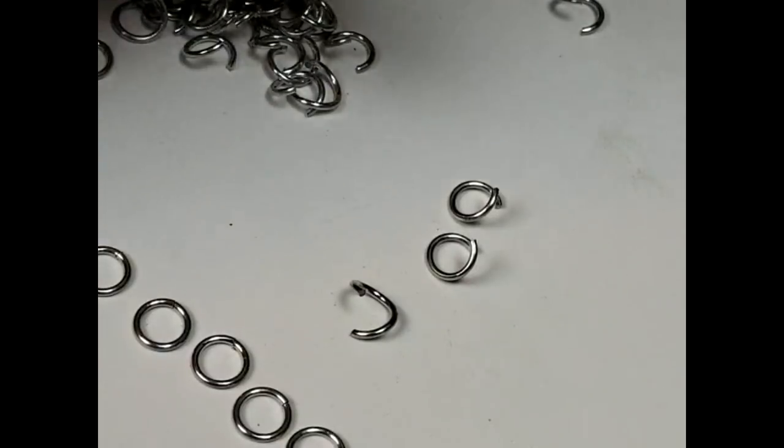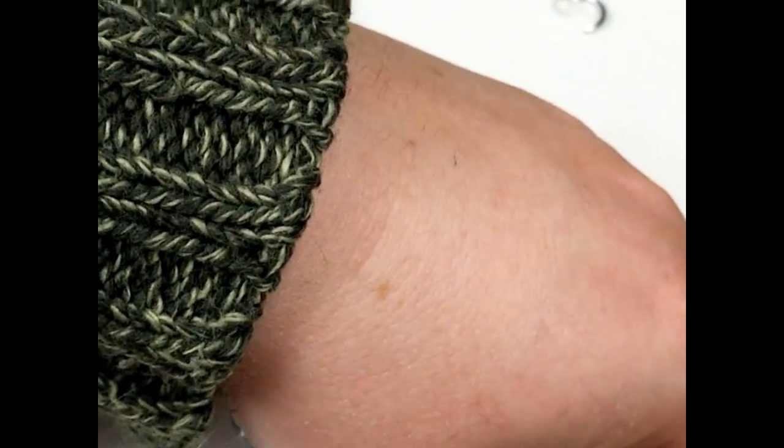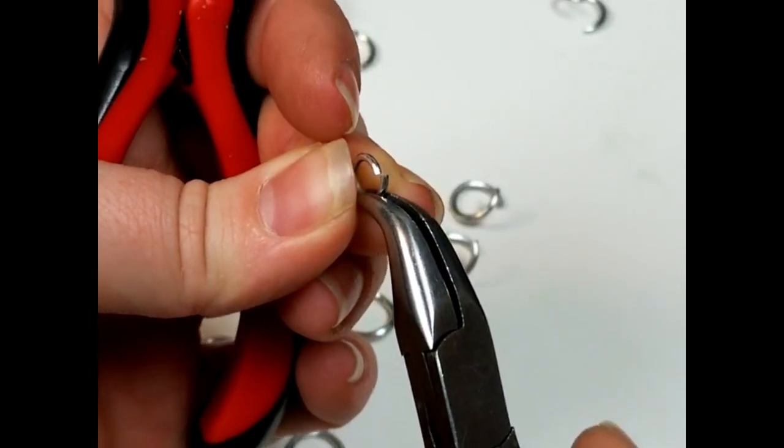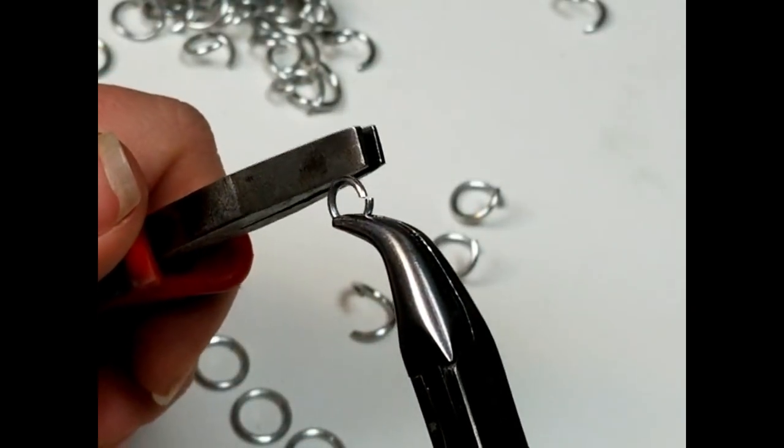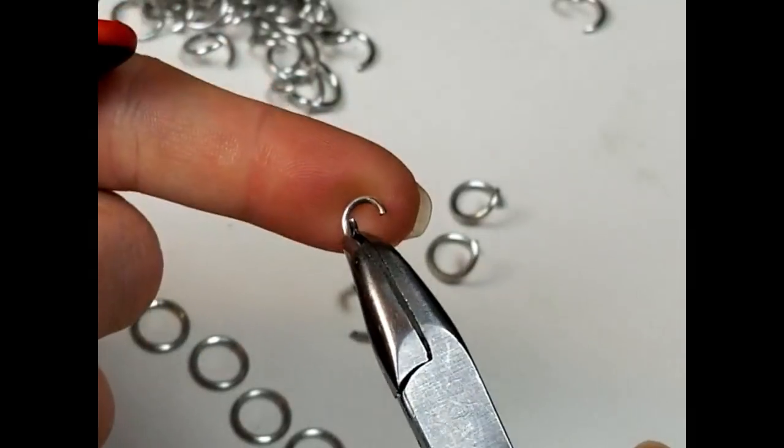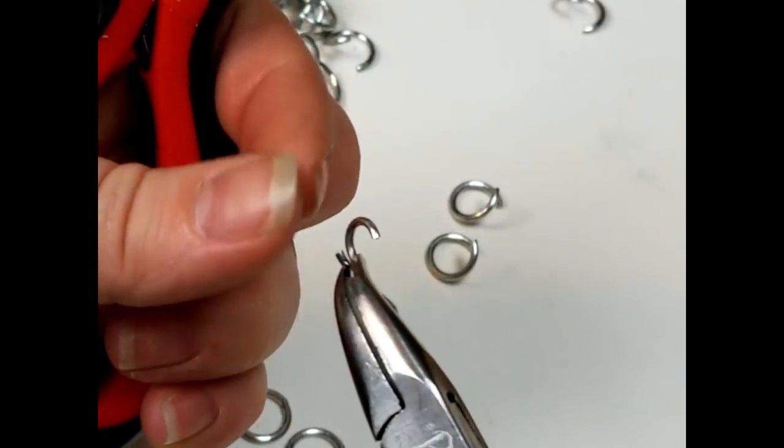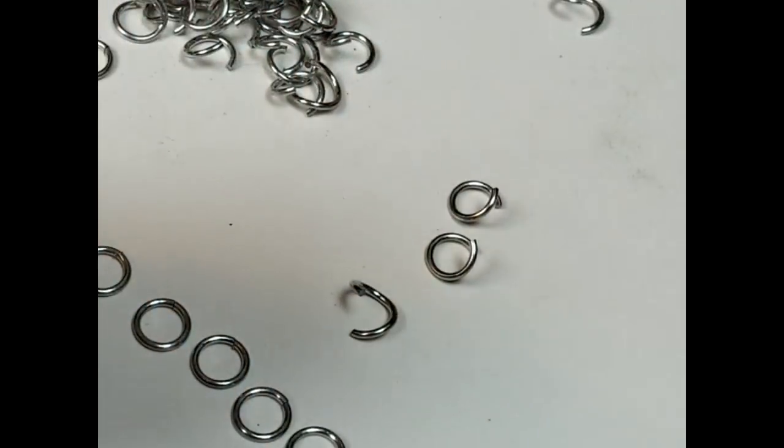You can get a little bit of a snap whenever you close it, and you get that by pushing your pliers in towards each other as you wiggle it back and forth. You just want to try to get as smooth and clean and tight of a connection as you can. Now, whenever you're opening a ring, you want to open it like this.